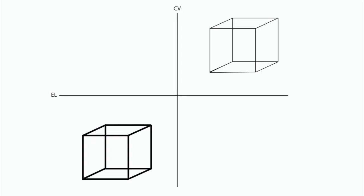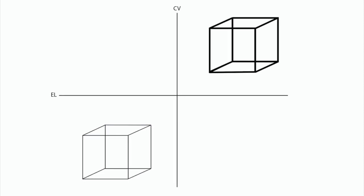By adding a vanishing point the cube on the bottom left should be seen as on the ground facing left and the cube in the top right should appear floating facing right.